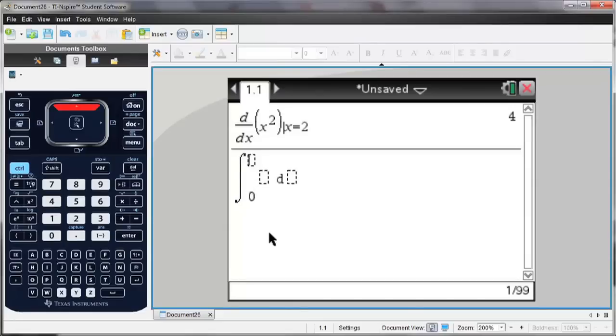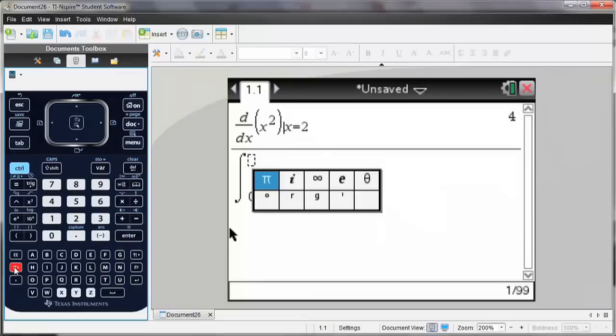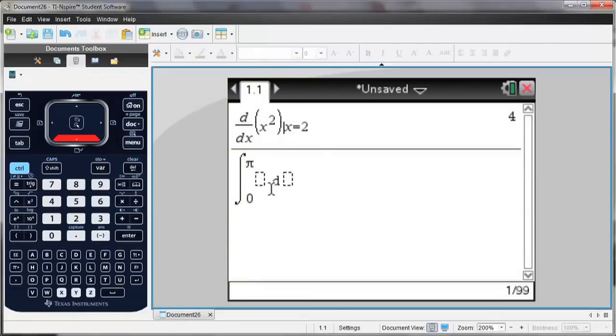And I can just enter the interval for which I'm going to integrate. I'll go from 0 to pi, and notice the pi key is down below next to the h. And again, my function, let's do sine of x dx. Hit enter, and there's the value of the integral between 0 and pi.